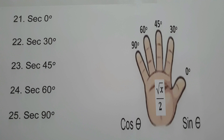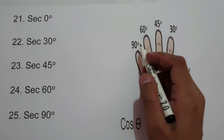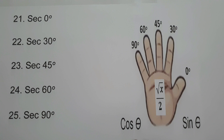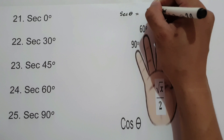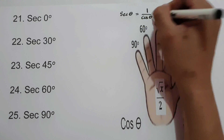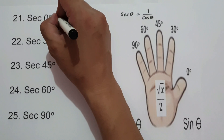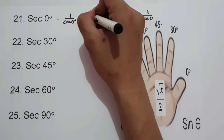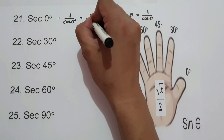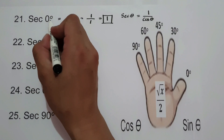On this set of examples, we are going to find the value of secant 0°, 30°, 45°, 60°, and 90° using the equation square root of x over 2. We know that secant theta equals 1 over cosine theta. For secant 0°, that is 1 over cosine 0°, which is 1 over 1 = 1. Secant 0° is 1.